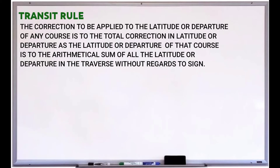For the transit rule, the correction applied to the latitude or departure of any course is to the total correction in latitude or departure as the latitude or departure of that course is to the arithmetical sum of all latitudes or departures in the traverse, without regard to sign.